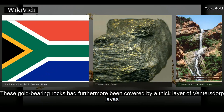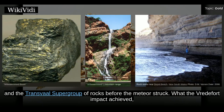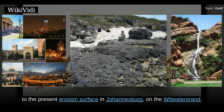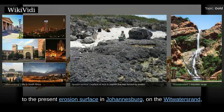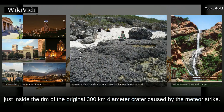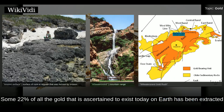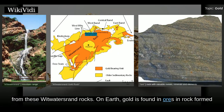However, the gold-bearing Witwatersrand rocks were laid down between 700 and 950 million years before the Vredefort impact. These gold-bearing rocks had furthermore been covered by a thick layer of Ventersdorp lavas and the Transvaal Supergroup of rocks before the meteor struck. What the Vredefort impact achieved, however, was to distort the Witwatersrand basin in such a way that the gold-bearing rocks were brought to the present erosion surface in Johannesburg on the Witwatersrand, just inside the rim of the original 300 km diameter crater. The discovery of the deposit in 1886 launched the Witwatersrand Gold Rush. Some 22% of all the gold that is ascertained to exist today on Earth has been extracted from these Witwatersrand rocks.